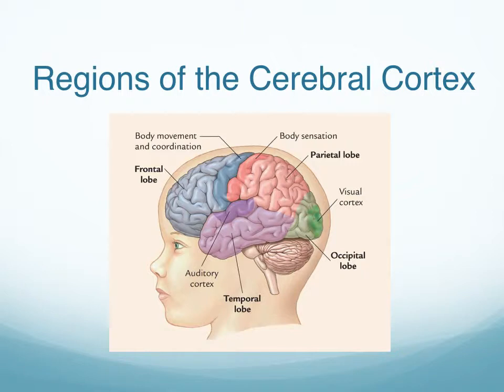Different regions of the cerebral cortex have specific functions. The parietal lobe is responsible for our sensory experiences — our experience of heat, cold, touch, pain, and our sense of body movement. The temporal lobe is our primary auditory area. The regions with the most extended period of development are the frontal lobes.